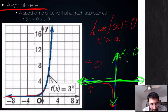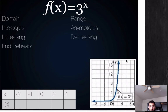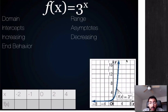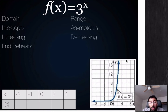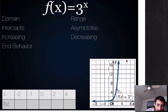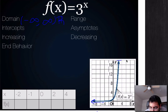Let's use some of this applied knowledge and see how it works with the function f of x equals 3 to the x. Let's go through and find our domain, range, intercepts, asymptotes, whether it's increasing or decreasing, and our end behavior. For domain, we know that for all exponential functions, the domain is going to be all real numbers — from negative infinity to infinity. You can look at the graph and see how it continuously goes towards smaller and smaller x values and larger and larger x values.